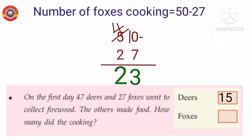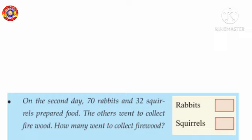10 minus 7 equals 3. 4 minus 2 equals 2. 50 minus 27 equals 23. Second question: on the second day, 70 rabbits and 32 squirrels prepare food. The others went to collect firewood. How many went to collect firewood?